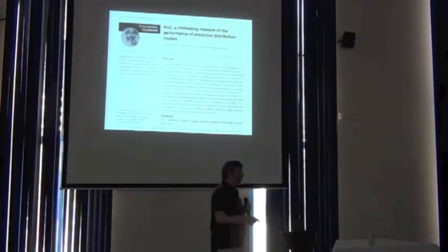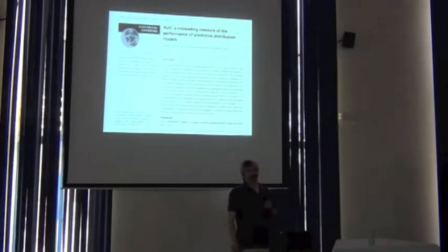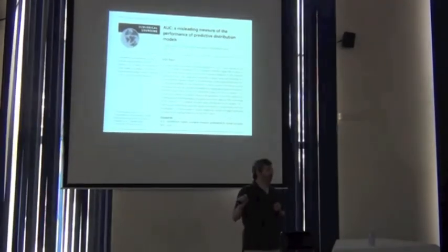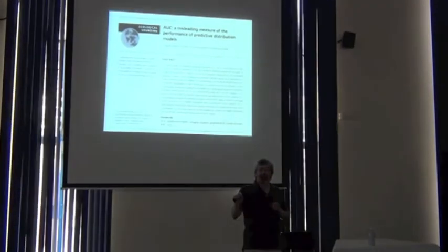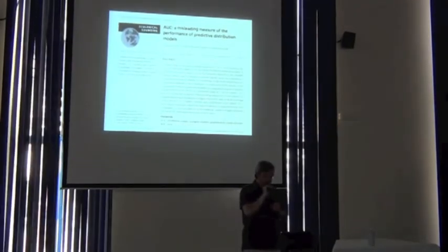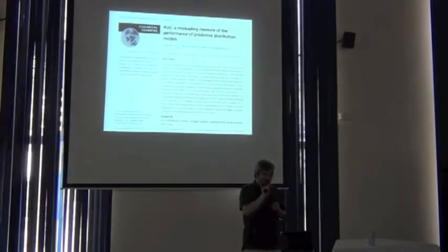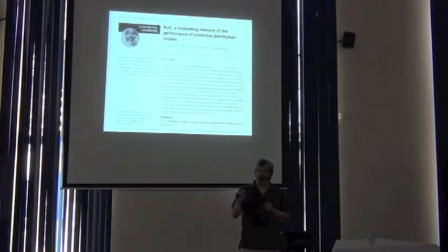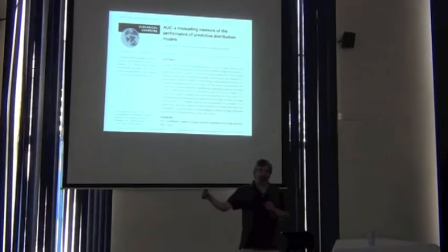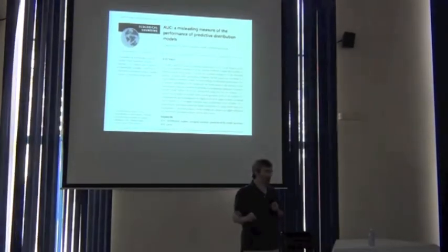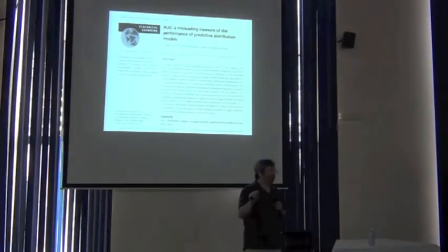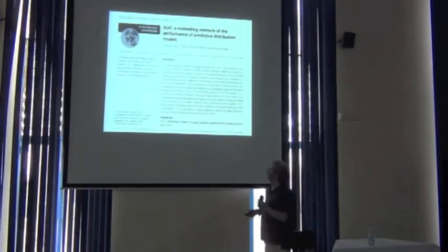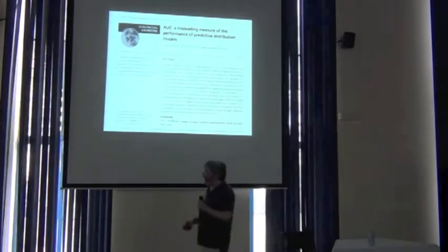And so every paper I review that makes these mistakes, I say, please read the Lobo et al. paper, cite it, and respond appropriately. And usually what they do is they cite it. Lobo et al. pointed out problems with the ROC approach in species distribution modeling and ecological niche modeling. Nonetheless, we use ROC analysis. I'm serious. Watch, you'll see. Read the literature, you'll see what I mean.